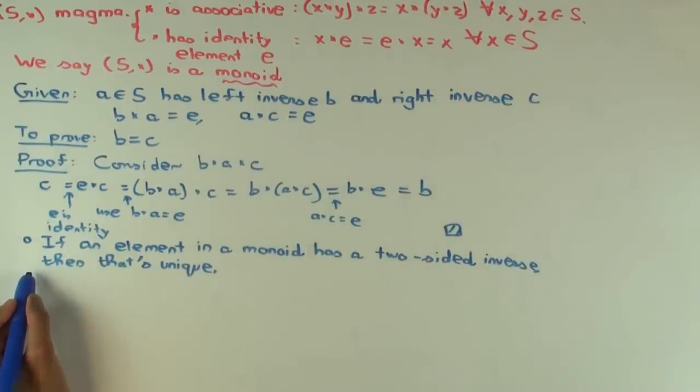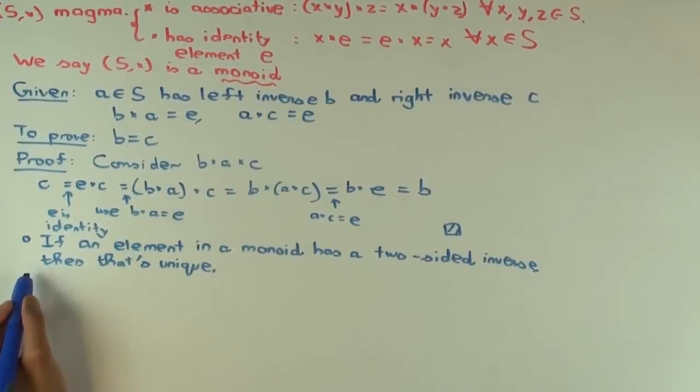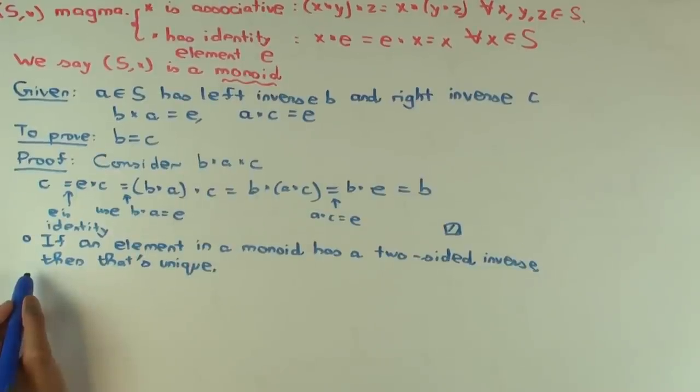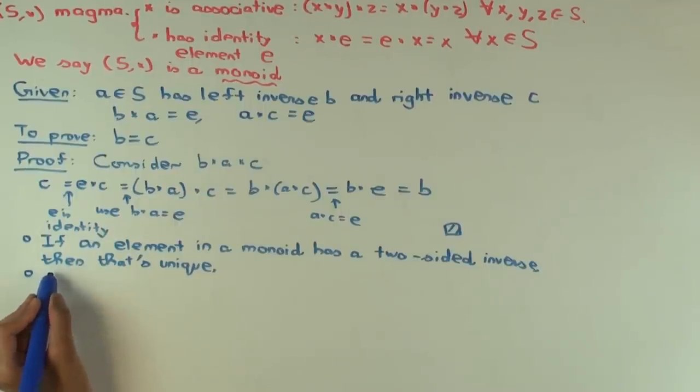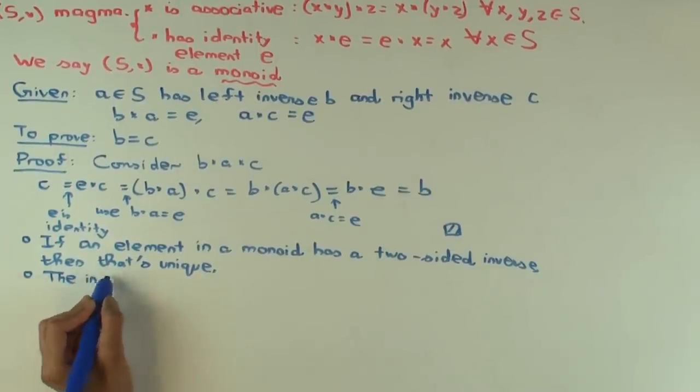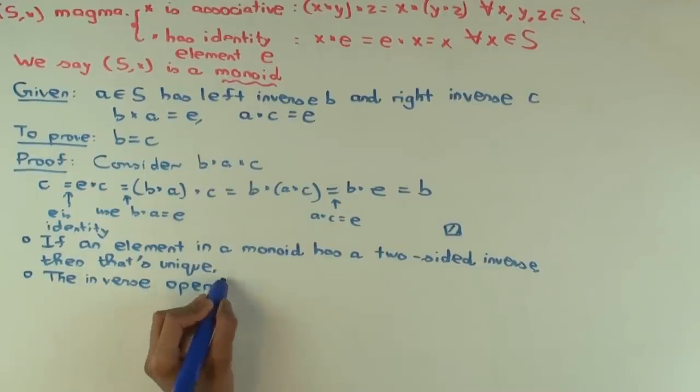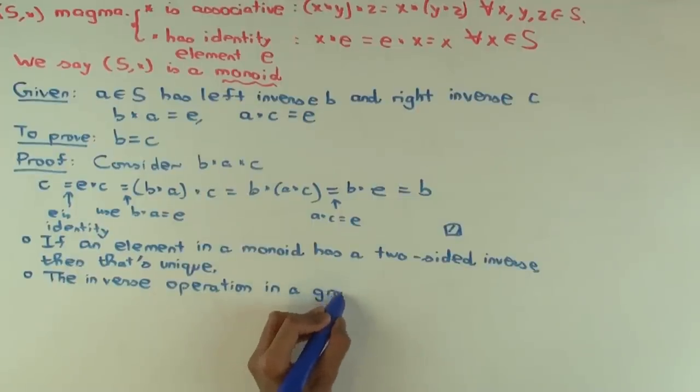So that's good. This follows just from that, treating one as left and the other as right. So, another related thing which is not so important, is that if every element has a left inverse and every element has a right inverse, that's equivalent to saying that every element has a two-sided inverse. But that's not so important. What I want to stress is another corollary of this, which is that the inverse operation in a group is uniquely determined by its multiplication.